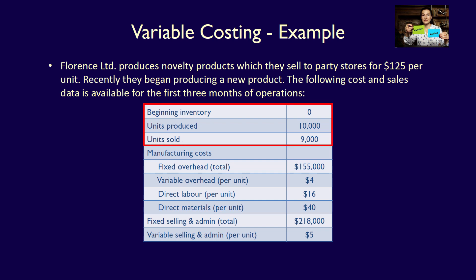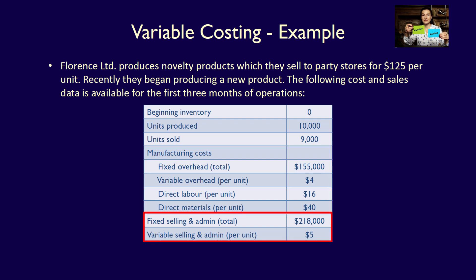Beginning inventory is zero units — that makes sense, it's brand new. Units produced: 10,000. Units sold: 9,000. Manufacturing costs include fixed overhead totaling $155,000, variable overhead per unit of $4, direct labor per unit of $16, and direct materials per unit of $40. Non-manufacturing costs include fixed selling and admin totaling $218,000, and variable selling and admin of $5 per unit.